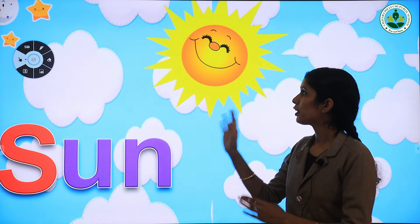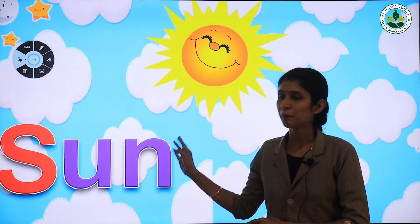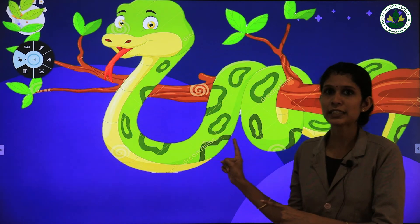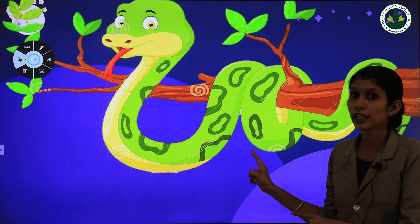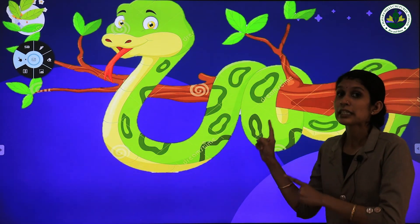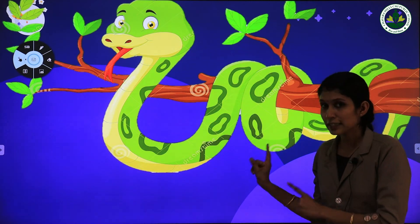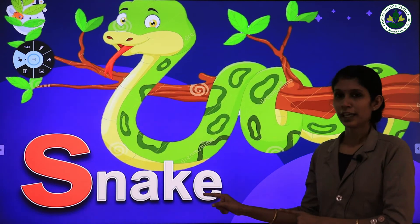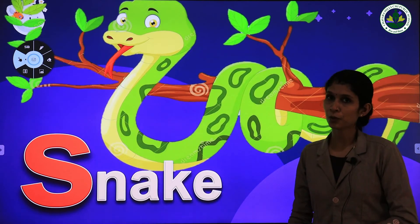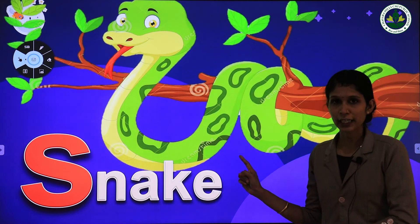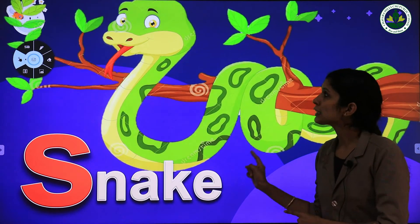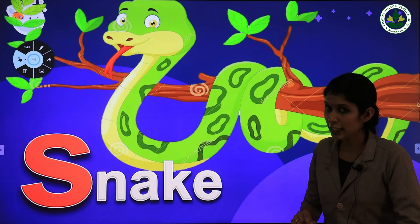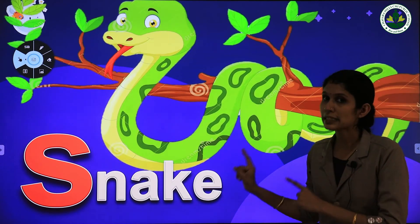Our next word — can you say what is this? Yes, it's a snake. What is this? Snake. S is for snake. S is for snake. Repeat after me: S is for snake.